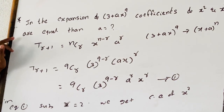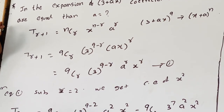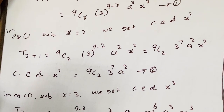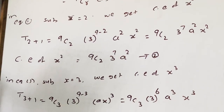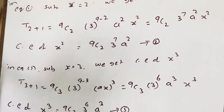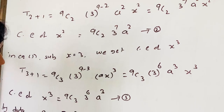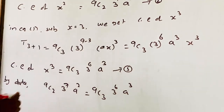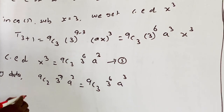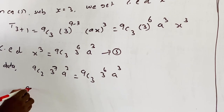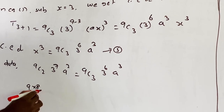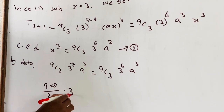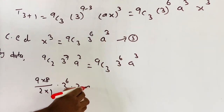Since the coefficients of x² and x³ are equal: 9C2 * 3^7 * a² = 9C3 * 3^6 * a³. Now, 9C2 = (9×8)/(2×1) and 3^7 = 3^6 × 3. So we write: 9C2 * 3^6 * 3 * a² = 9C3 * 3^6 * a² * a.